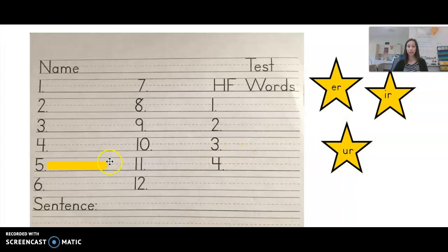Okay, and now for number six, we are going to be switching patterns. So the first five were ER, most common. Now starting at six, we're going to go with the second most common, IR. So number six is stir. Stir. I need to stir the chocolate milk. Stir.